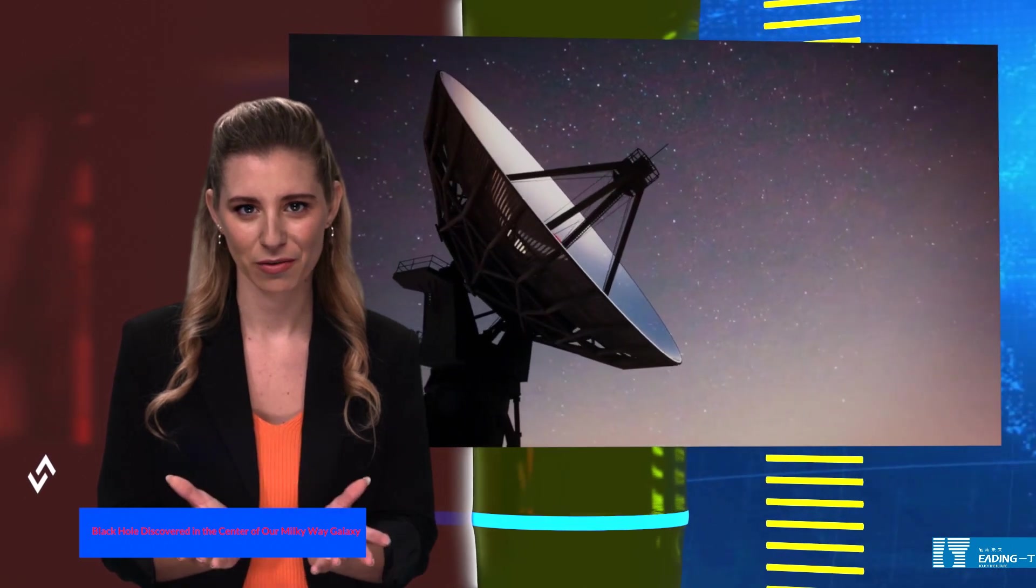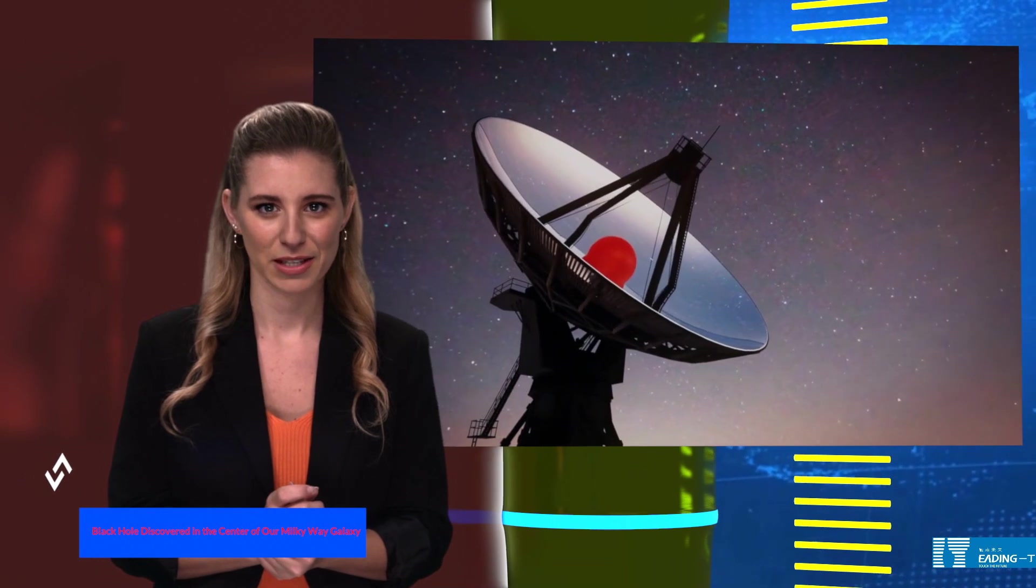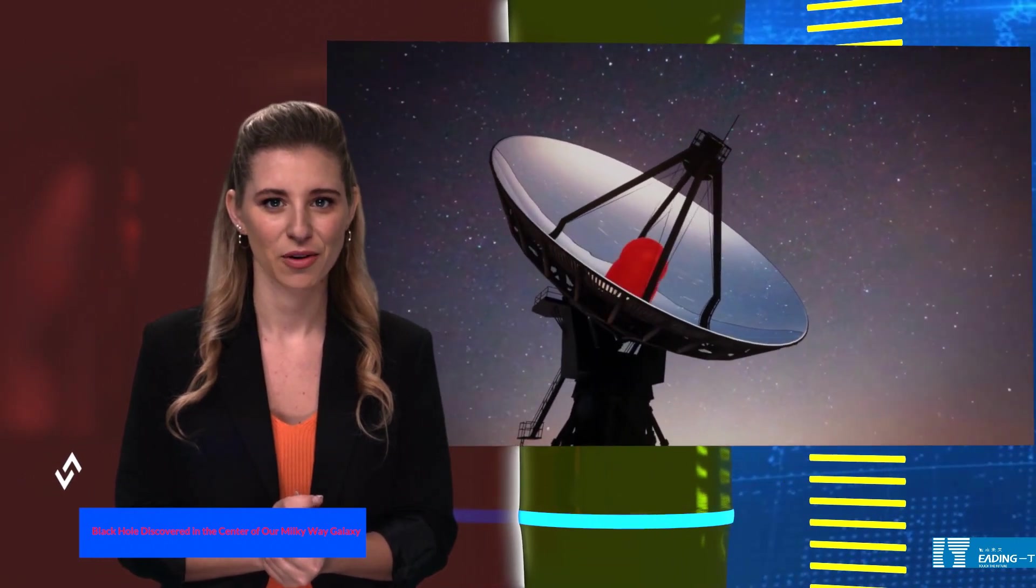Recent discoveries by researchers from the European Southern Observatory have revealed a supermassive black hole lurking in the center of our Milky Way galaxy. This enormous black hole is estimated to be 4 million times as massive as our sun and is positioned at one of the densest areas in our galactic core.